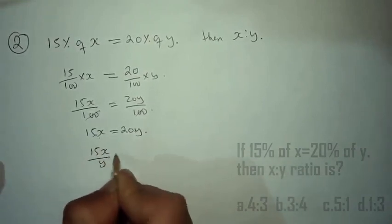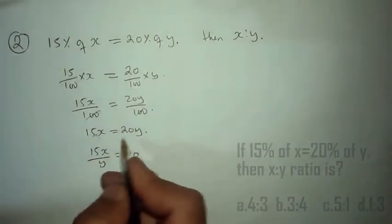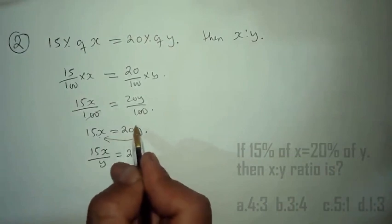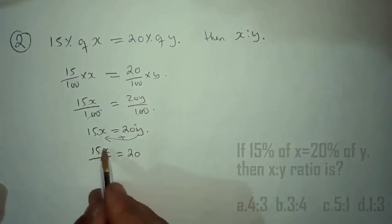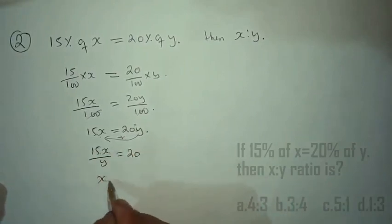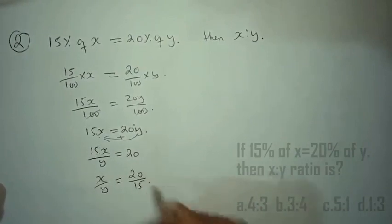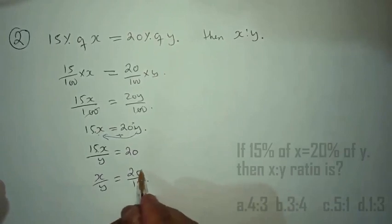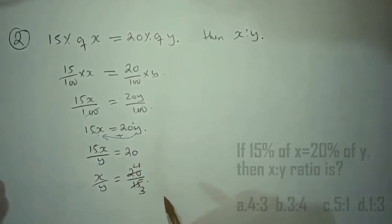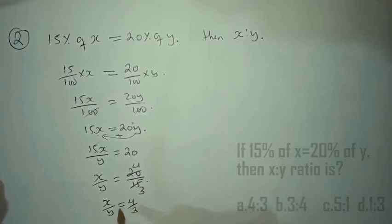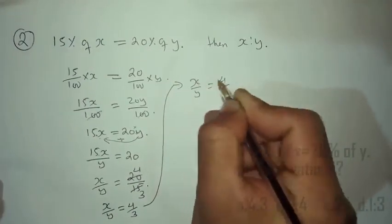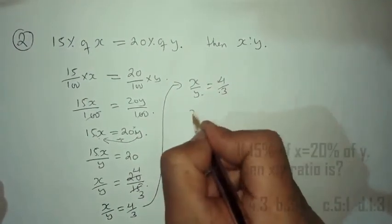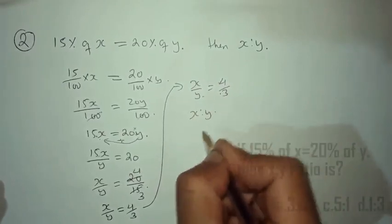15x divided by y equals 20. Similarly, x over y equals 20 divided by 15. Since 5 into 4 is 20 and 5 into 3 is 15, x over y equals 4 over 3. So the ratio is 4 over 3, meaning x is equal to 4 and y is equal to 3. X is to y is 4 is to 3.